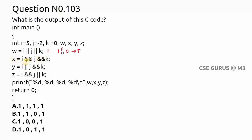For x equals i && j && k: i=5 and j=-2 are both non-zero, so both true. True && true = true. Then true && k: k=0 means false. True && false = false. So x = 0.